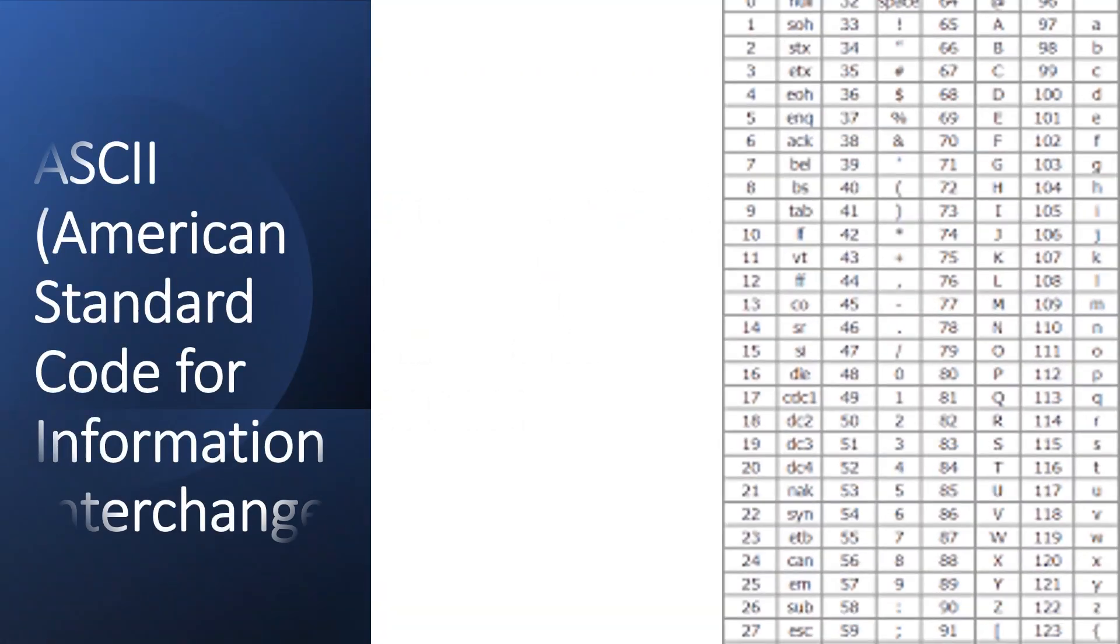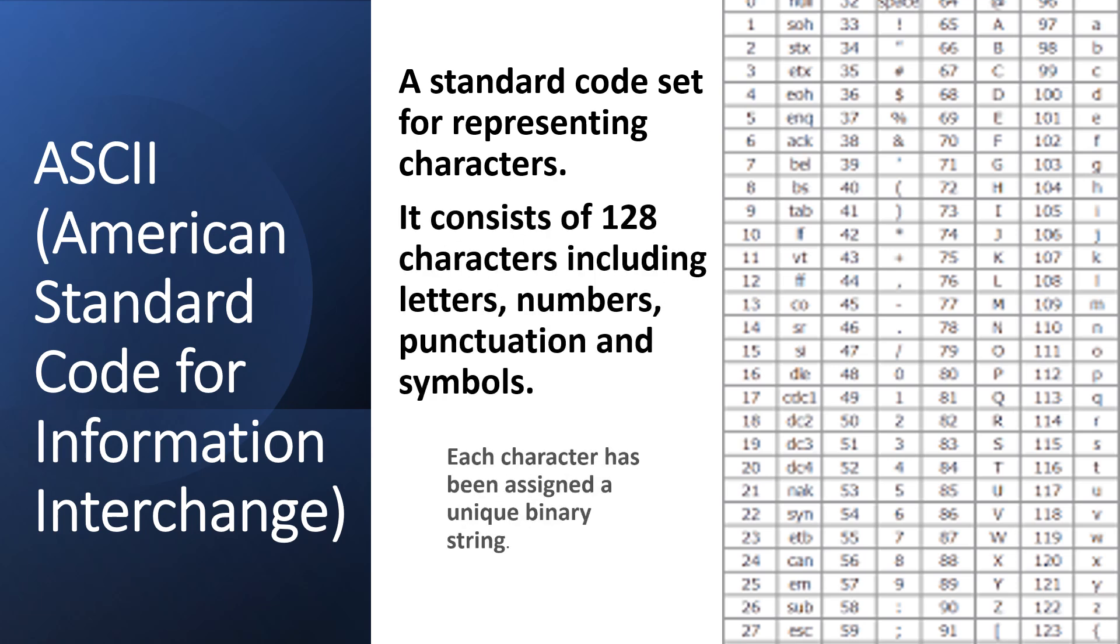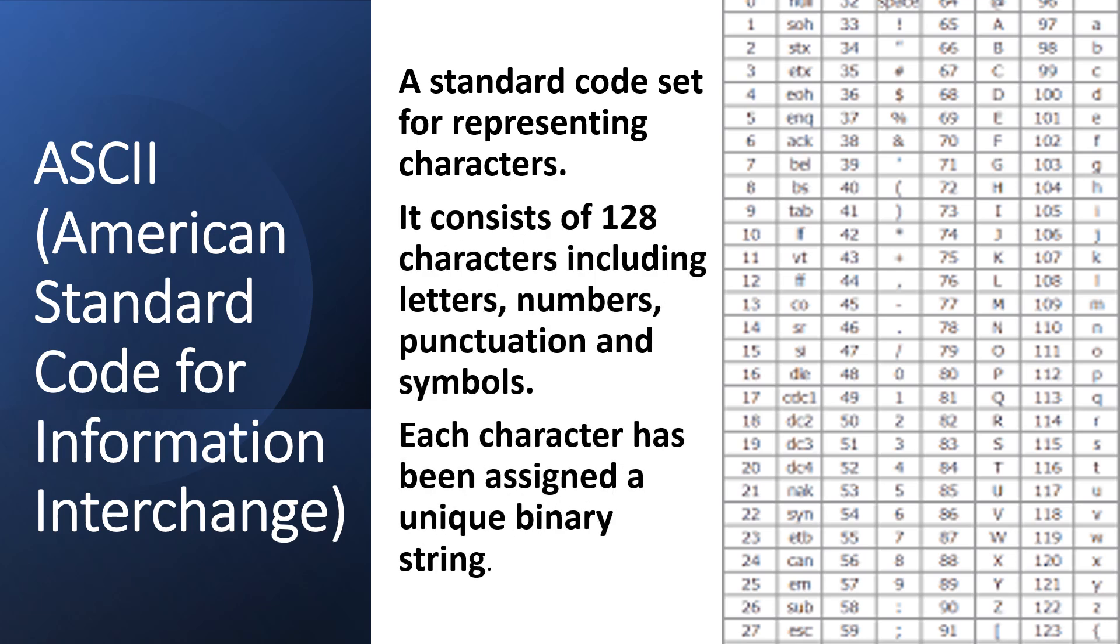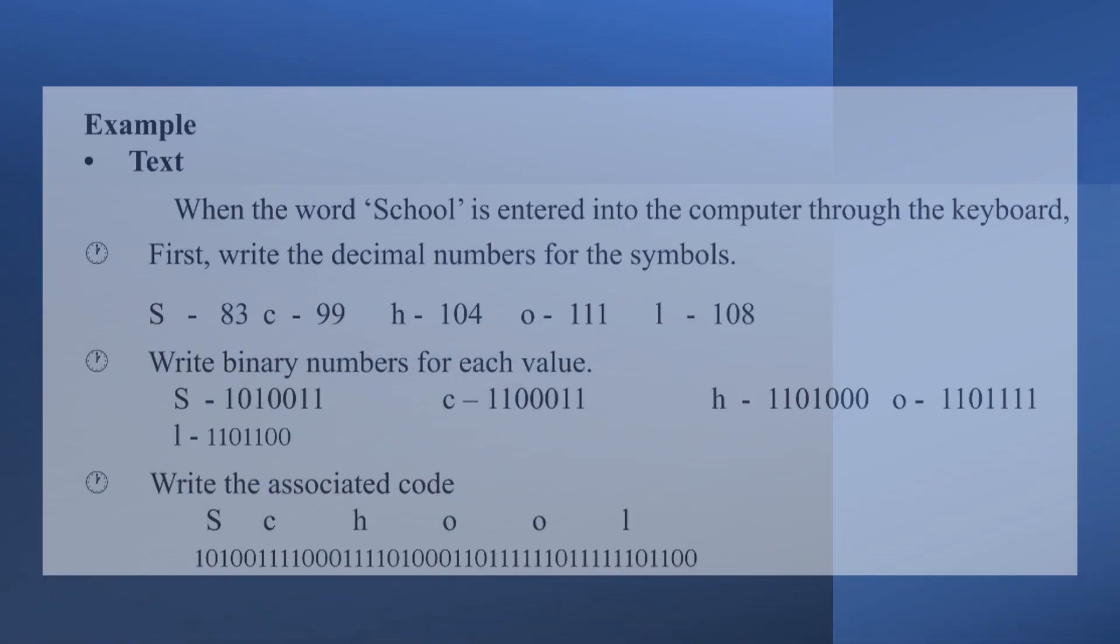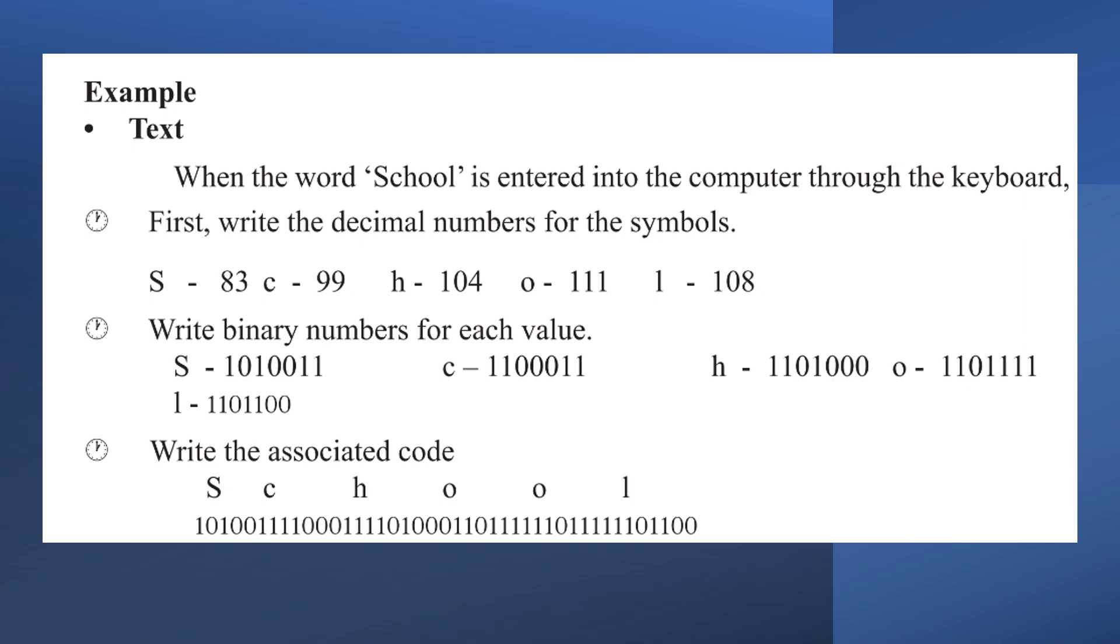ASCII, American Standard Code for Information Interchange, a standard code set for representing characters. It consists of 128 characters including letters, numbers, punctuation and symbols. Each character has been assigned a unique binary string. This example shows how this is to be done.